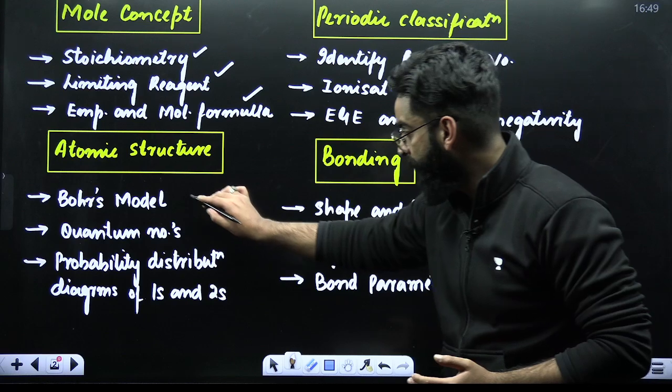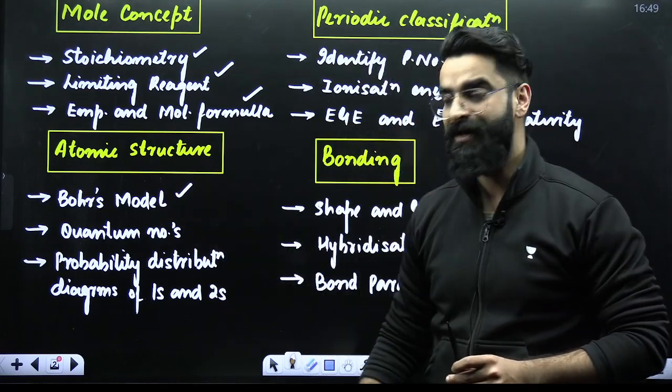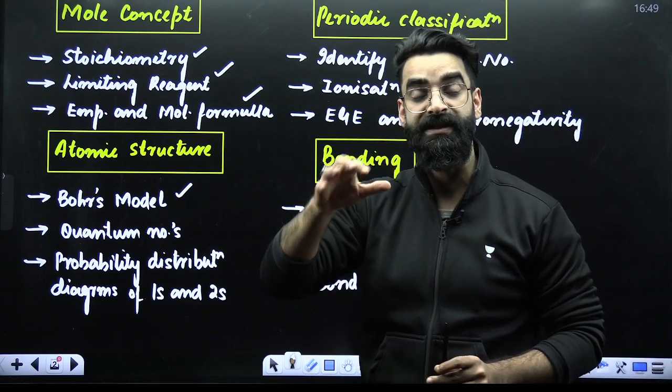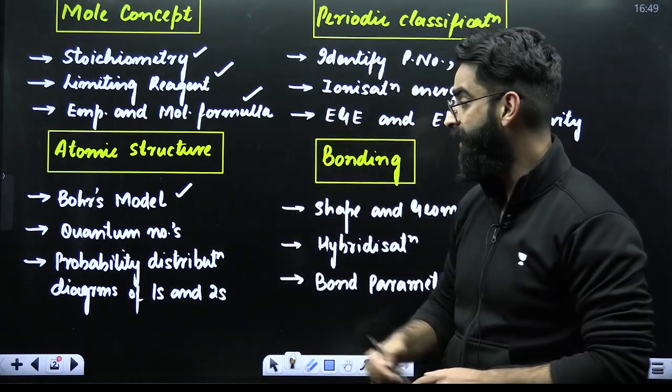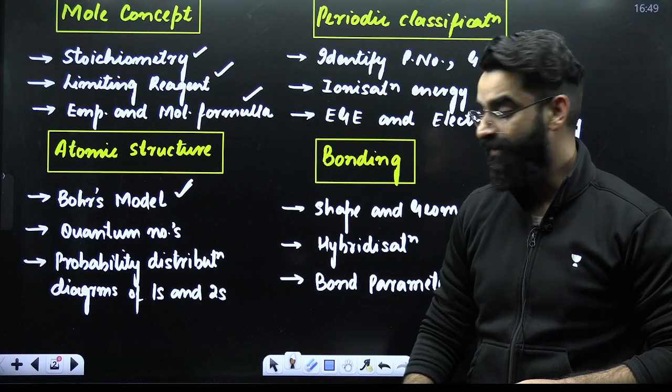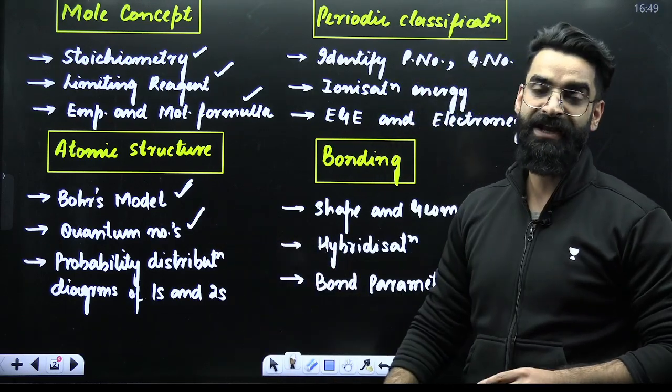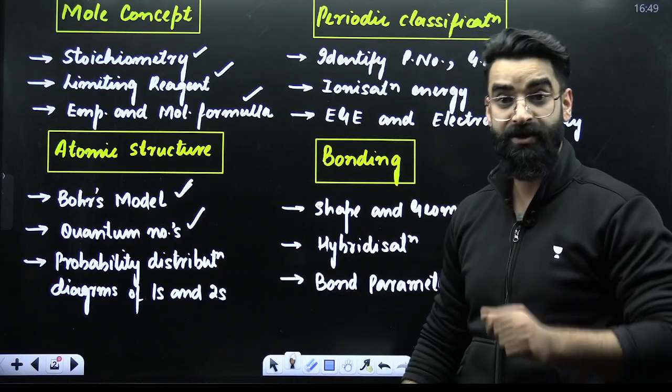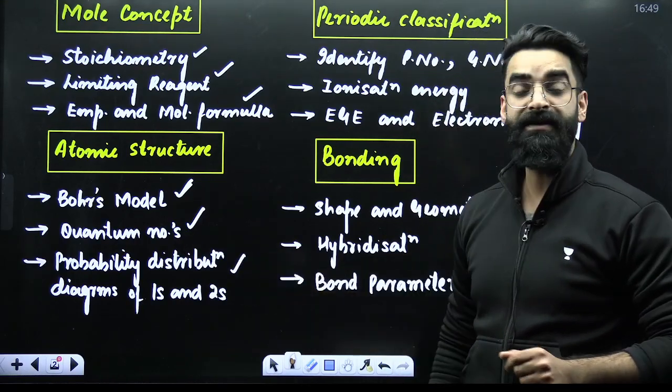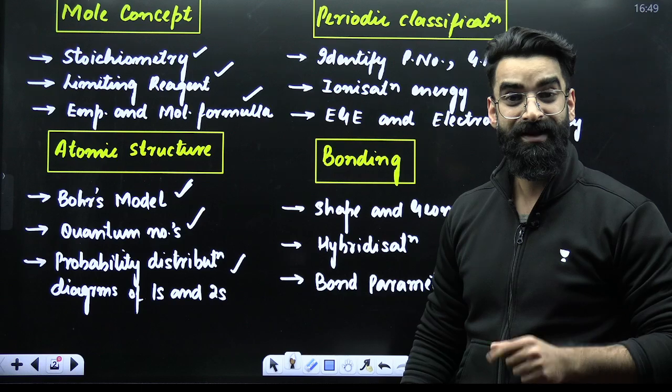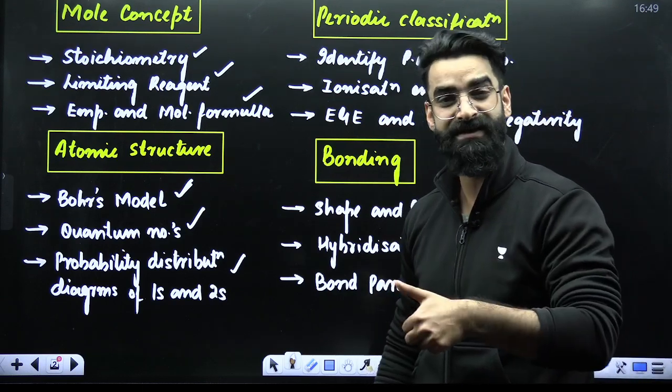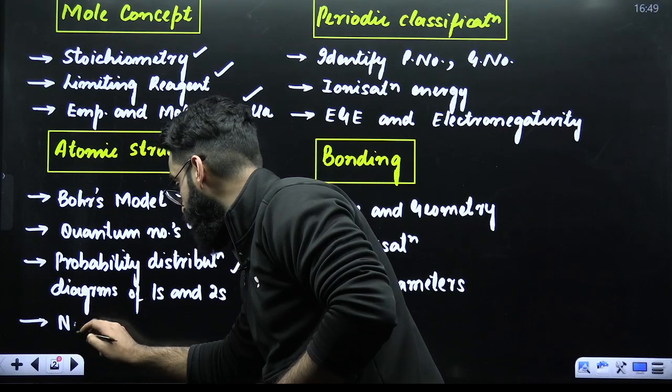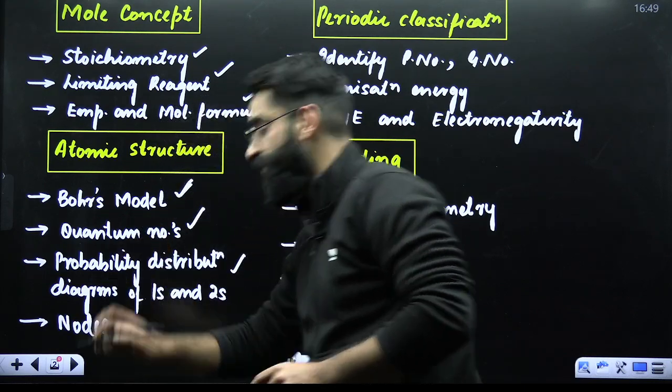When it comes to atomic structure, Bohr's model. What exactly you have to study in Bohr's model? In the Bohr's model, we do the calculation of radius, velocity, time period, frequency. Please have an eye on that. Quantum numbers, again, one of the finest topic which students find very easy and from this topic again questions are asked. Then comes your probability distribution diagrams of your 1s and 2s. Basically, psi versus R and psi square versus R, particularly for 1s and 2s. And one thing you need to add over here, that is the calculation of nodes.